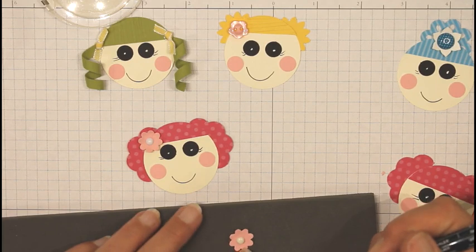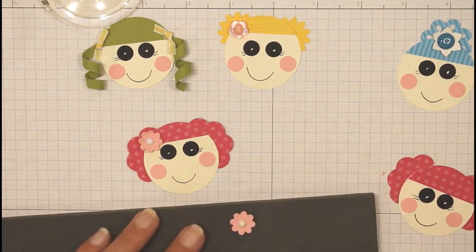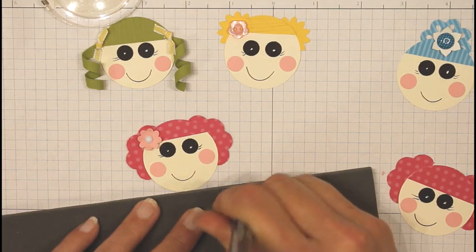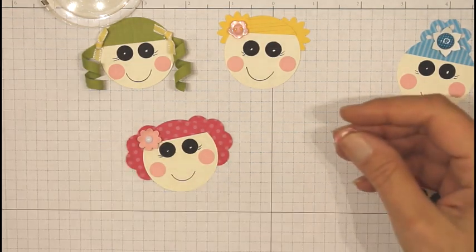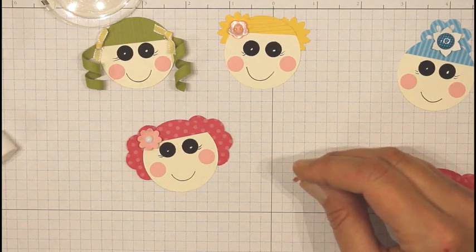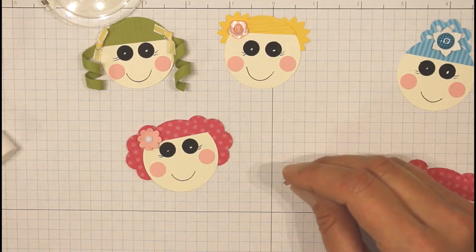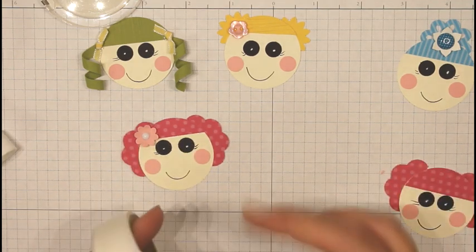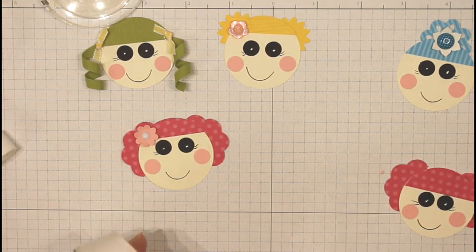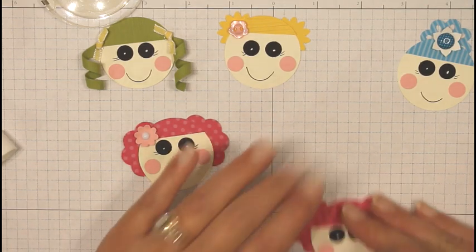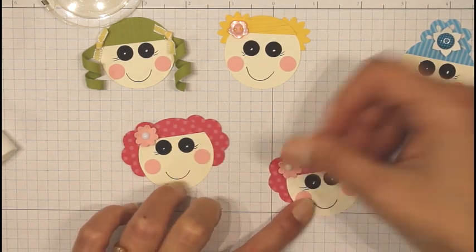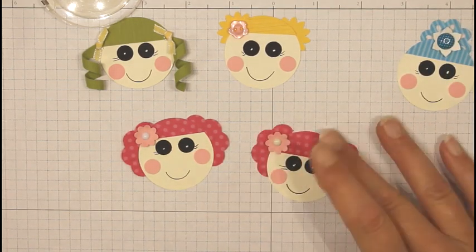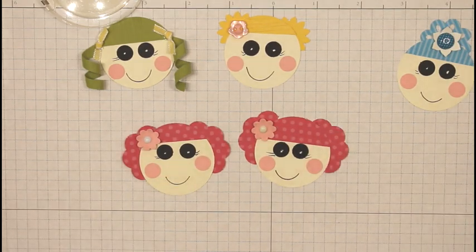Now to give the flower a little bit of dimension, I stick it on my mat and push it down. And we'll attach it with a glue dot. The face is a little crooked compared to the first one, but it's not too bad.